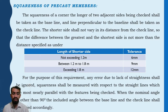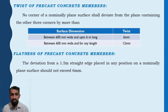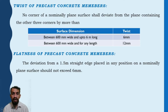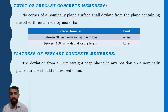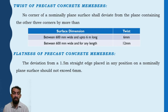Twist and flatness of precast members: for twist, no corner of a nominal plane surface shall deviate from the plane containing the other three corners by more than 6 mm for surfaces between 600 mm wide and up to 6 meters long, and not more than 12 mm for any length. For flatness, the deviation from a 1.5-meter edge placed in any position on a nominal plane surface should not exceed 6 mm.